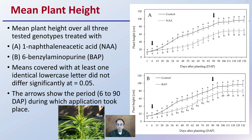We're looking at mean plant height across two graphs. The control is the solid line in both, and the lighter or dashed line is the different hormones — NAA is in the auxin family, BAP is in the cytokinin family. We're looking at mean plant height over all three tested genotypes. NAA is in graph A, and BAP is in graph B. Means covered with at least one identical lowercase letter did not have a significant difference at a p-value of 0.05. The arrows show the period of 60 to 90 days during which applications took place — one application around day 60 and another around day 90.